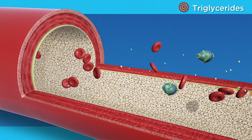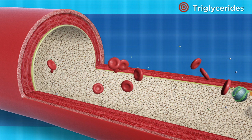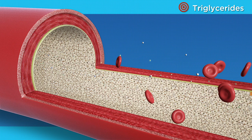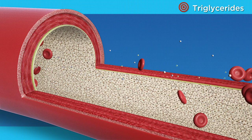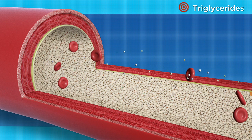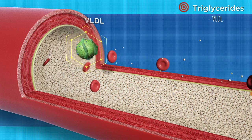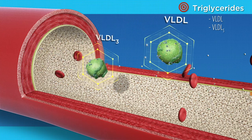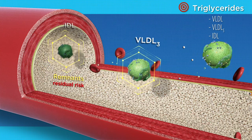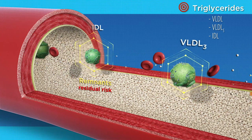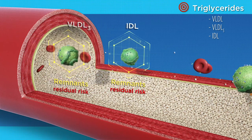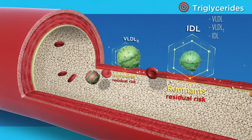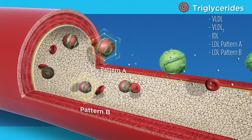In the triglycerides category, the VAP Plus looks at the complete triglyceride picture for early identification of patients with increased risk for cardiometabolic disorders. It measures the VLDL, the VLDL3 remnant of VLDL, and the IDL. IDL and VLDL3 comprise what is commonly referred to as remnants. Additionally, it measures the LDL pattern.